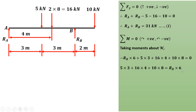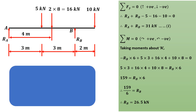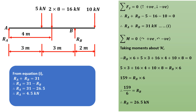Transferring the negative Rb term to the other side: 5 into 3 plus 16 into 4 plus 10 into 8 equals Rb into 6, giving 159 equals Rb into 6, so Rb equals 159 divided by 6, that is Rb equals 26.5 kN. From equation one, Ra plus Rb equals 31 kN, so Ra equals 31 minus 26.5, giving Ra equals 4.5 kN. In this way we find the support reactions at A and B for a simply supported beam with point loads, UDL, and an overhang on the right hand side.